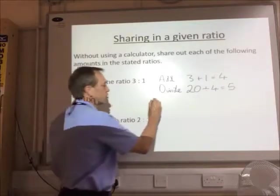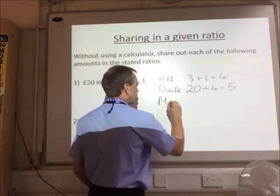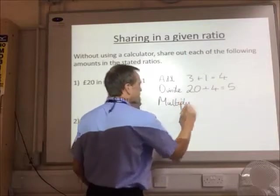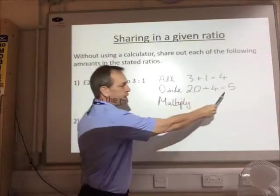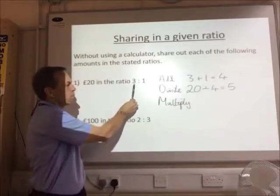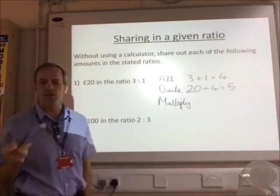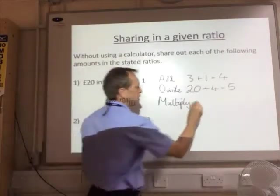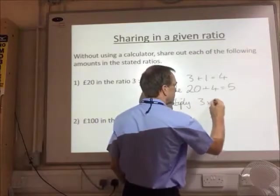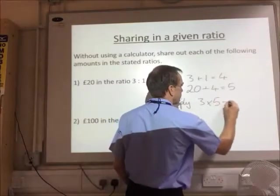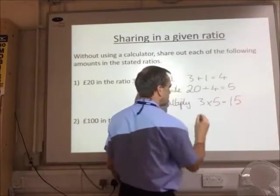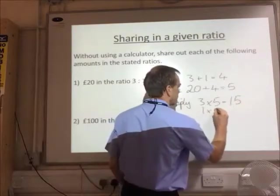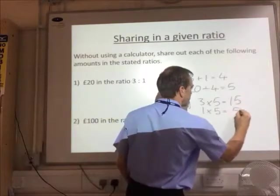And then we're going to multiply. I'm going to use that 5 there that we've just come up with. And we're going to multiply each of the numbers in our ratio by that 5. So we've got 3 times 5 is 15, 1 times 5 is 5.